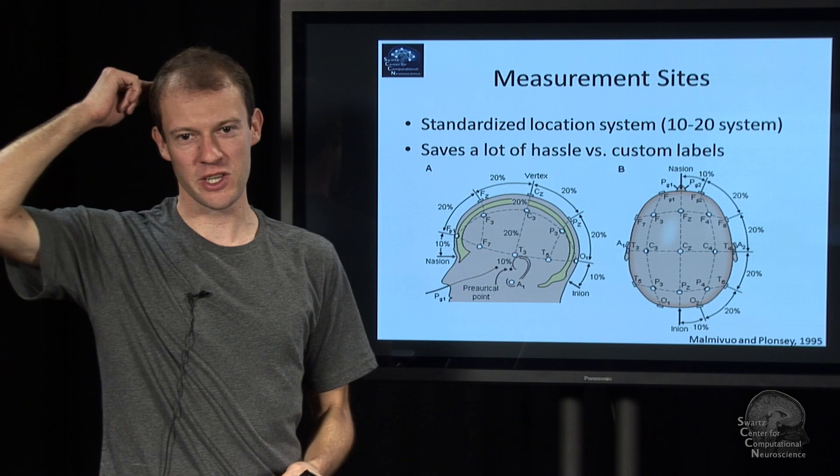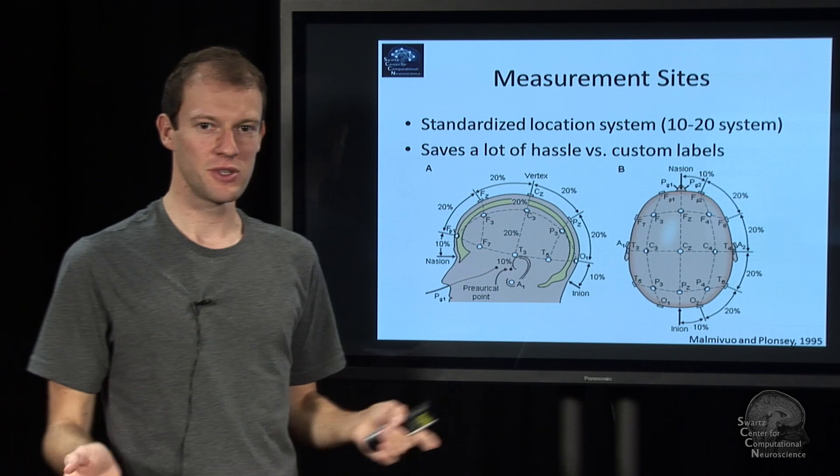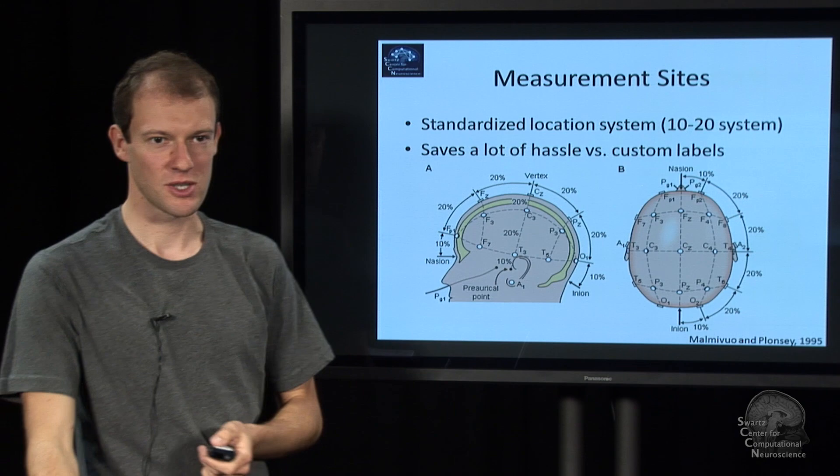If you're off by a centimeter here, you're also off by a centimeter in cortex, and that might mean that you're completely off from the source patch that you wanted to measure. But if you do actually measure where your electrodes are with a digitizer, you can sort of correct for that. But very few people have a digitizer and actually measure this properly.